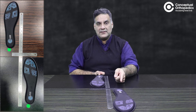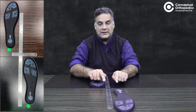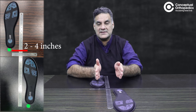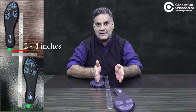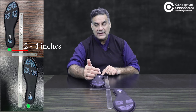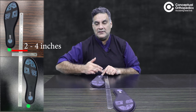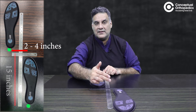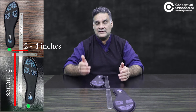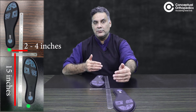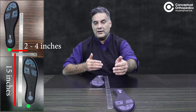The width between the two heels is 2 to 4 inches — that's the normal base of gait. And the heel-to-heel distance between the two feet is about 15 inches; that's the distance between the two feet while you're walking.